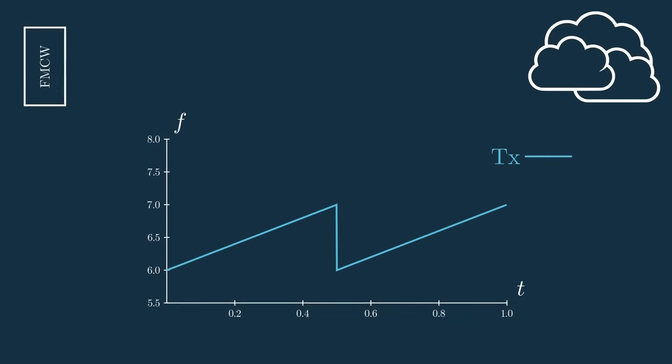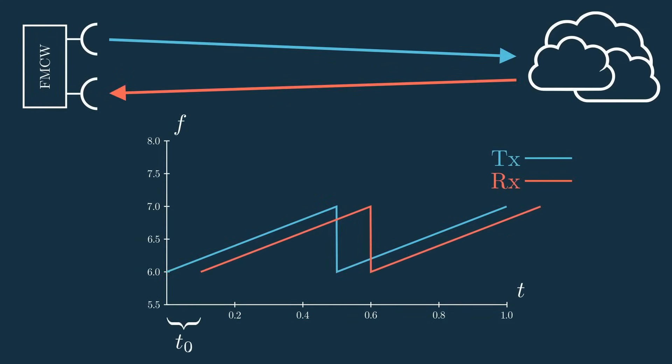Now that our frequency isn't constant, we start to be able to see that once the wave returns to the antenna, there is a visible shift in time from our transmitted signal. This is really cool, because it affords us some new information. At any given point in time now, we have two signals, one being transmitted and one being received.